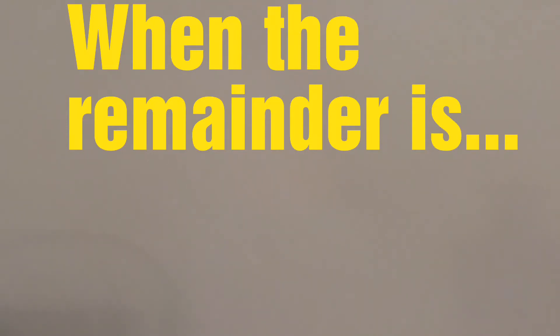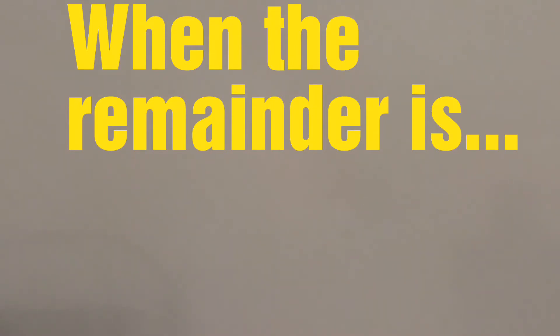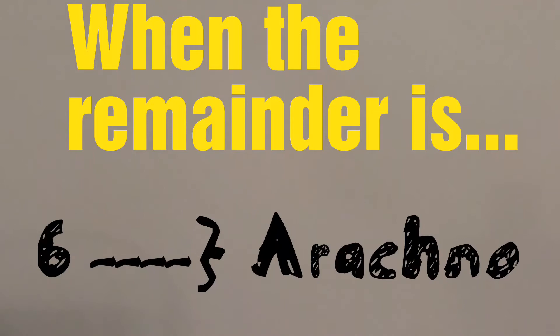When the remainder is 4, the structure is nido. When the remainder is 6, the structure is arachno.